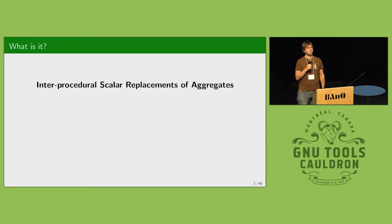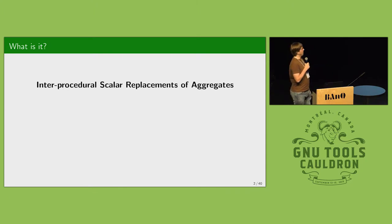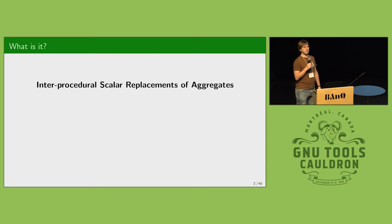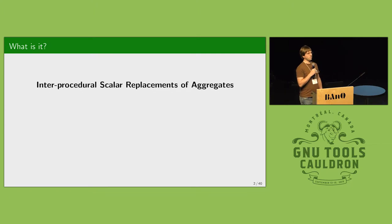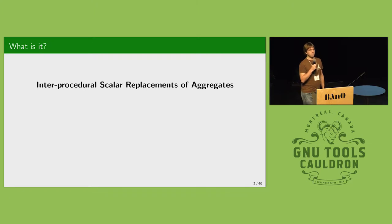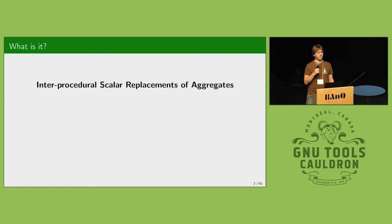SRA comes from 'scalar replacement of aggregates.' The pass is named that way because when I was re-implementing the normal intra-procedural traditional scalar replacement of aggregates a long time ago, we were also working with Honza on various inter-procedural things. The idea was that it would be nice to split parameters that are aggregates in functions where we have complete control over them — where they're static, or with LTO, local to the whole program or shared library.